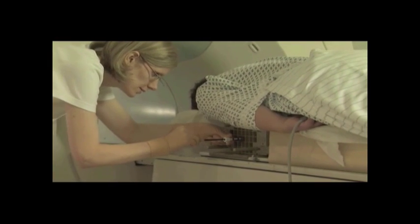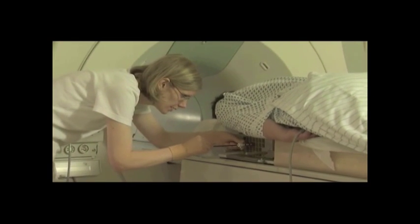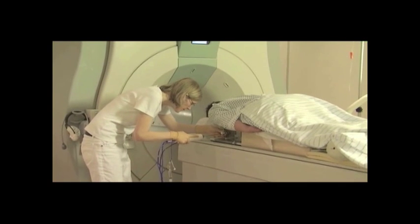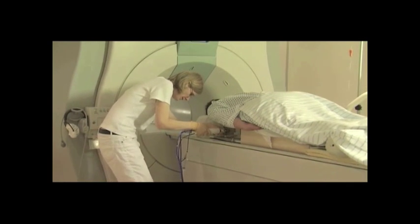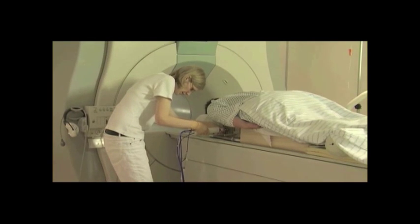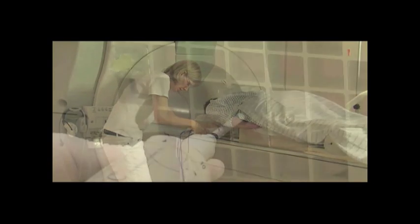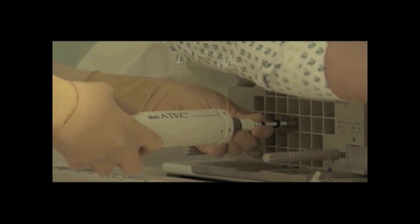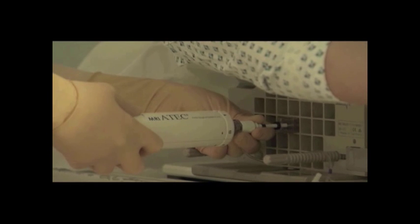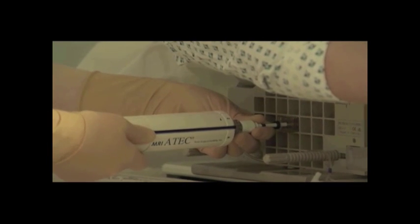Remove the localizing obturator from the introducer sheath. Place the Atec MRI handpiece into the introducer sheath on the desired starting clock position indicated by the numbers on the handpiece. The flat portion of the handpiece correlates to the cutting aperture. With this surface facing up, your needle will be at the 12 o'clock position. Core samples can be taken at any clock position depending on the location of the area of interest.